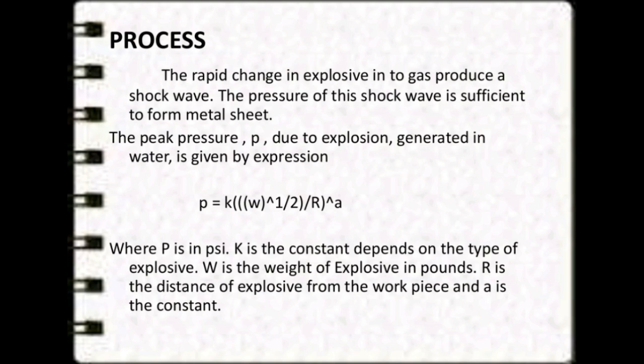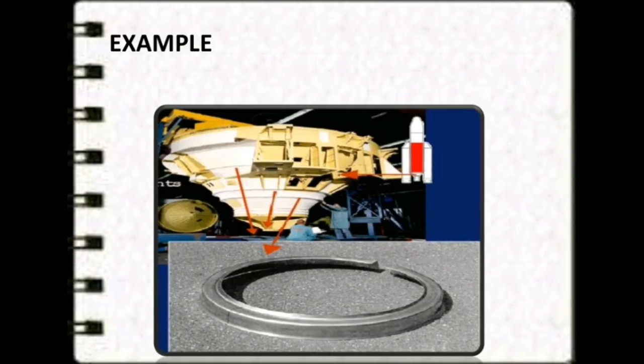In the process, the rapid change of explosive into gas produces a shock wave. The pressure of this shock wave is sufficient to form the metal sheet. The peak pressure P due to explosion generated in water is given by: P = K × W^(1/2) / R^a, where P is in psi, K is a constant depending on the type of explosive, W is the weight of the explosive in pounds, R is the distance of the explosive from the workpiece, and a is a constant.